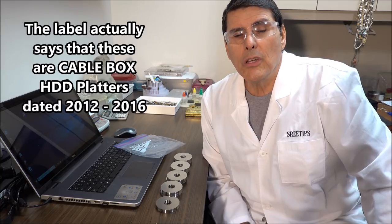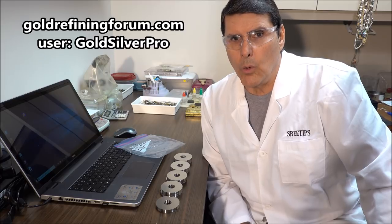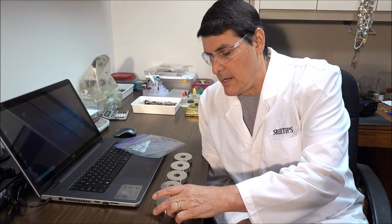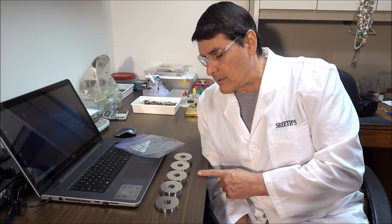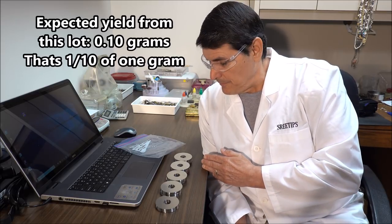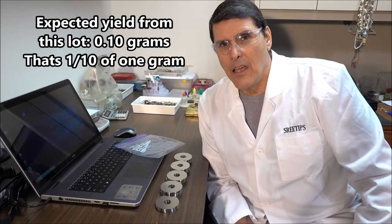I've done some research and found a thread on the Gold Refining Forum written by a fella named Gold Silver Pro. According to this thread, it will take 900 of these particular types of hard disk platters in order to recover one gram of pure platinum. I have 93 here, so the expected yield is only going to be about one tenth of one gram.